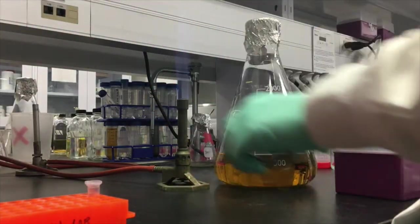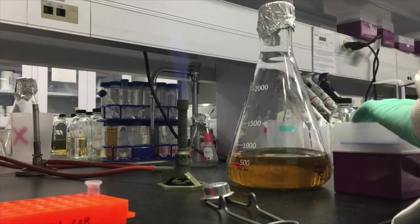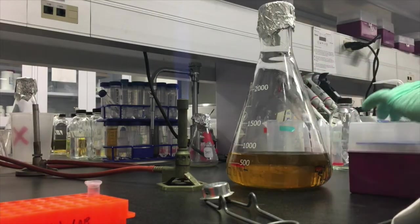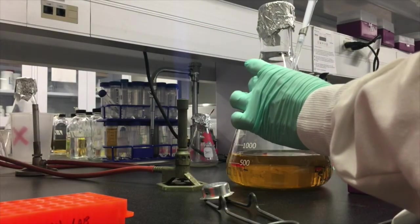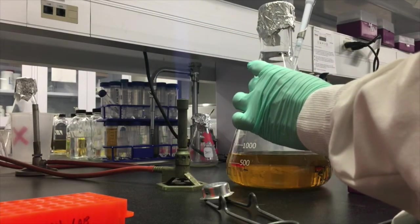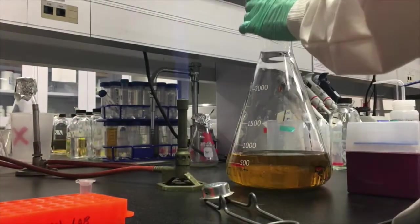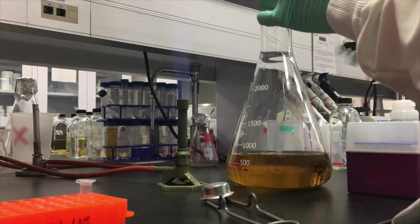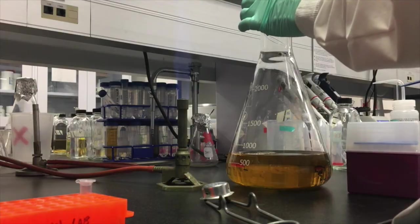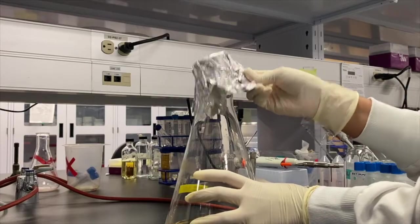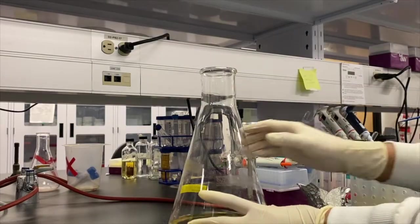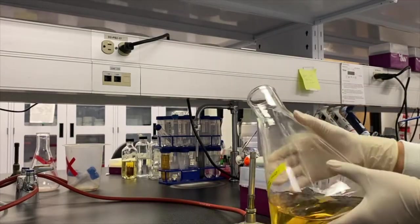After you've grown the starter culture overnight, you can use it to inoculate the larger expression culture in the 2 liter Erlenmeyer flask. But first, you need to add antibiotic to the media for the expression culture. Again, from a 1,000 times concentrated stock, add 1 microliter of antibiotic solution per milliliter of culture media, or 1 milliliter of antibiotic solution for 1 liter of media. Once the antibiotic has been added to your culture media, it's ready for inoculation.